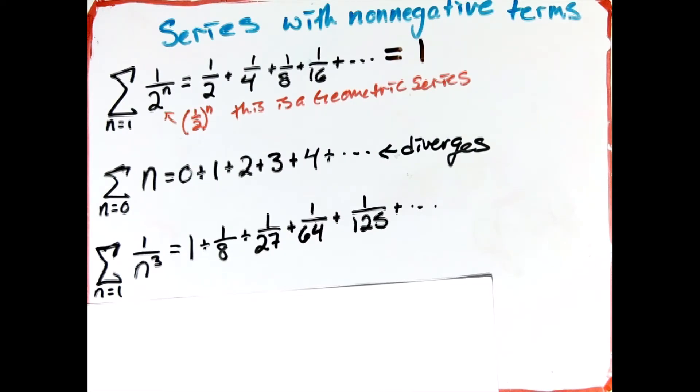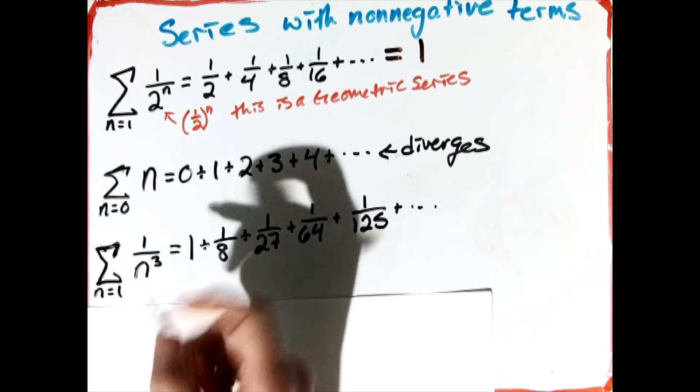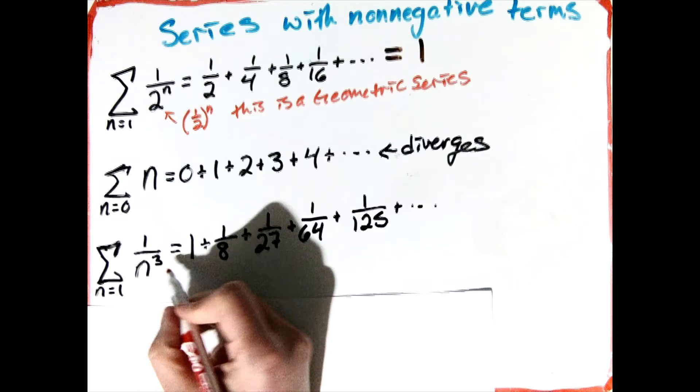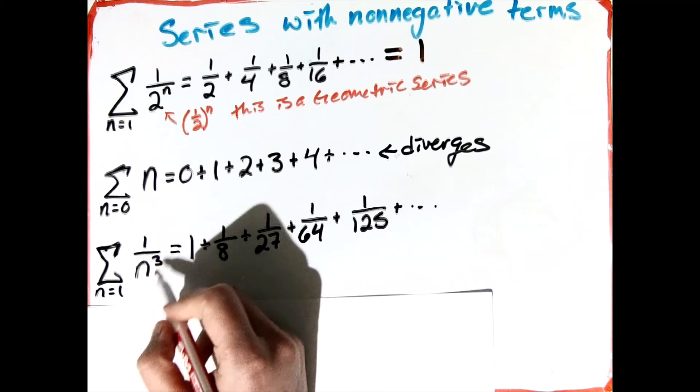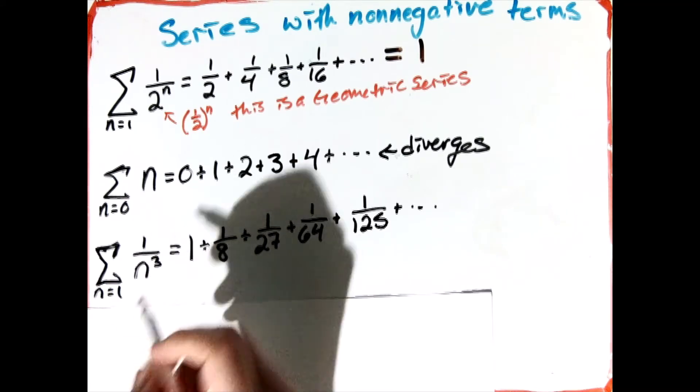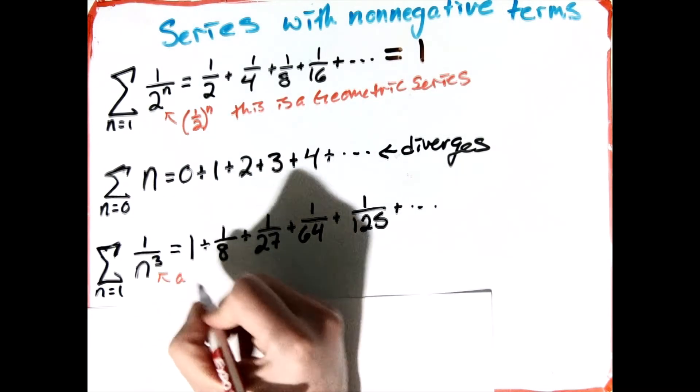And we don't know yet, we haven't talked about series like these yet, so we don't know if this converges or diverges, but this does have a name. This specifically when it's 1 over n to a power, when it's n to some power like this, this is called a p-series.